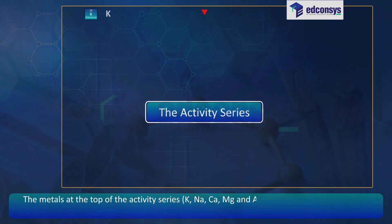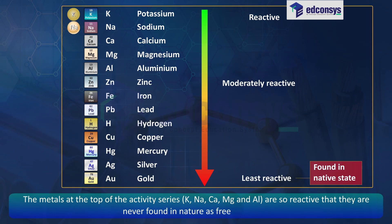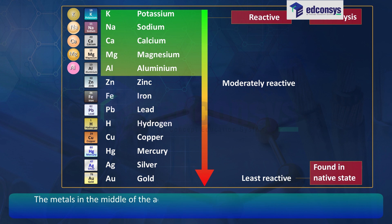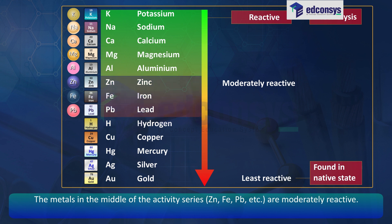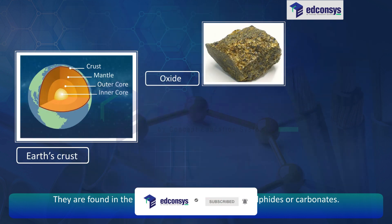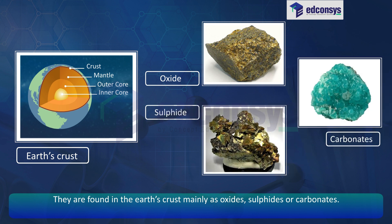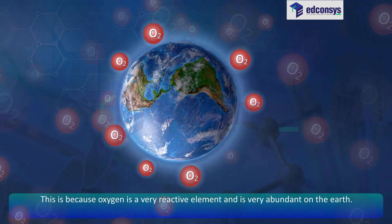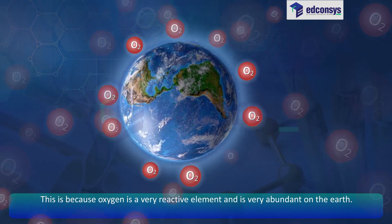The metals at the top of the activity series — K, Na, Ca, Mg and Al — are so reactive that they are never found in nature as free elements. The metals in the middle of the activity series, such as Zn, Fe, Pb, etc., are moderately reactive. They are found in the earth's crust mainly as oxides, sulphides or carbonates. The ores of many metals are oxides because oxygen is a very reactive element and is very abundant on the earth.